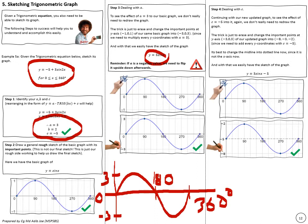Step four: deal with c by shifting the graph. Add c to each y-value — here c is minus five — so three plus minus five is minus two, zero minus five is minus five, and minus three minus five is minus eight. The original x-axis is no longer the midline, so draw a dotted line to indicate the new midline so you don't confuse it with the x-axis.